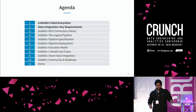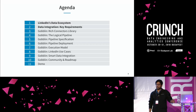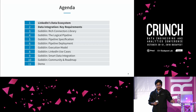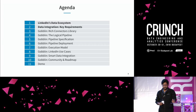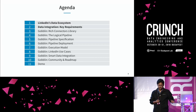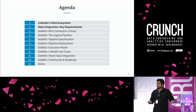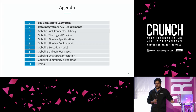We'll briefly look at what LinkedIn's data ecosystem looks like today and what are the key requirements that jump out of that ecosystem. Then we'll go over some features of Goblin and how it addresses those key requirements. Then we'll talk about a couple of LinkedIn use cases, smart data integration, community and roadmap, and if time permits, a quick demo so you can get started with Goblin.